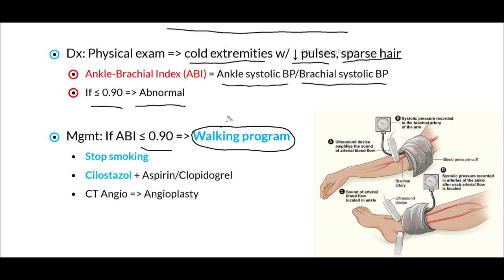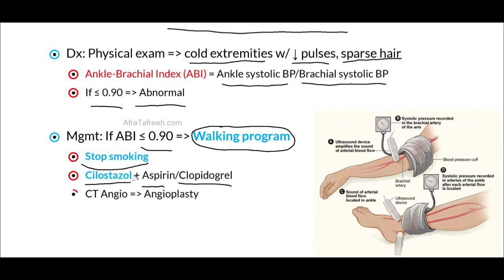In addition to getting patients on a walking program, we must also encourage these patients to stop smoking, as this is frequently a cause of their atherosclerosis. Additionally, we can prescribe cilostazol, as well as in some cases aspirin and clopidogrel as antiplatelet therapy. Starting the patient on a structured walking program, telling the patient to stop smoking, and starting an antiplatelet regimen are essential in management. For patients who have progression of their vascular claudication, we should consider getting a CT angiogram and ultimately proceeding with angioplasty or in some cases vascular surgery.